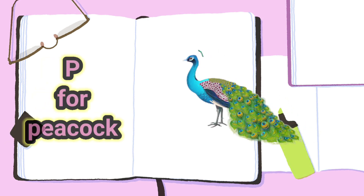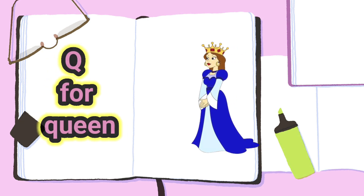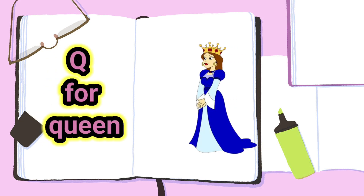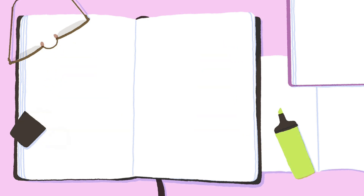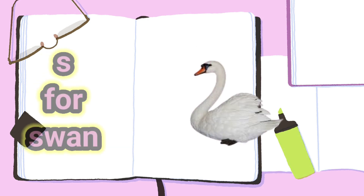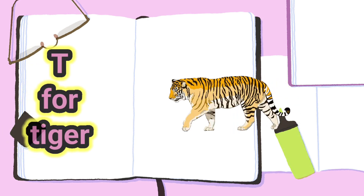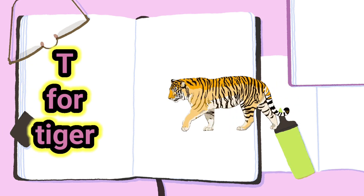B for pico, U for queen, R for rose, S for swan, E for tiger.